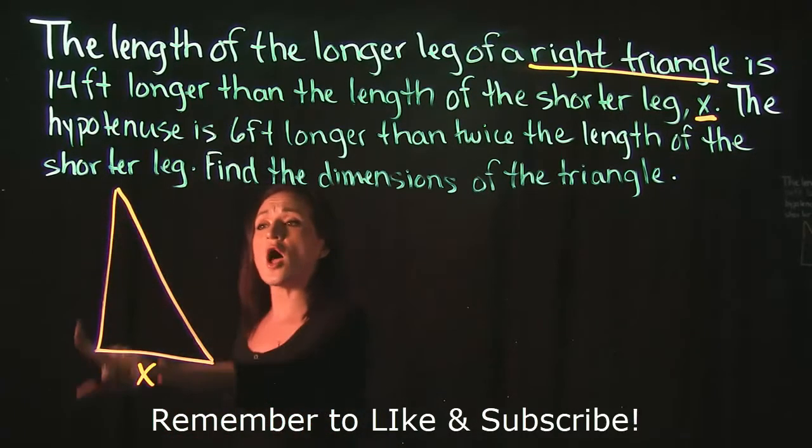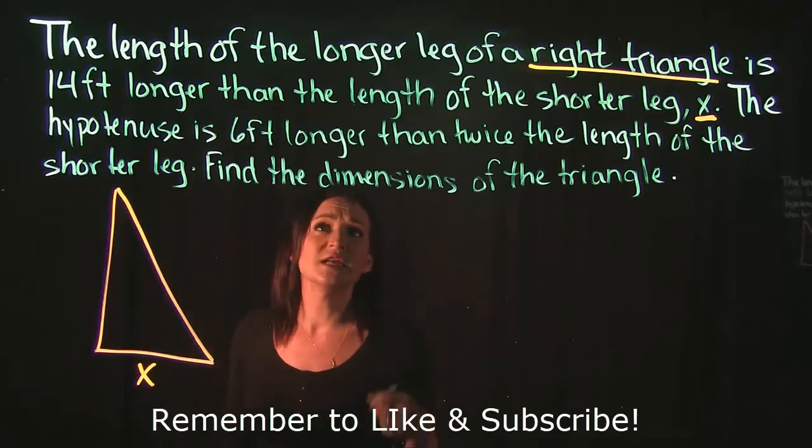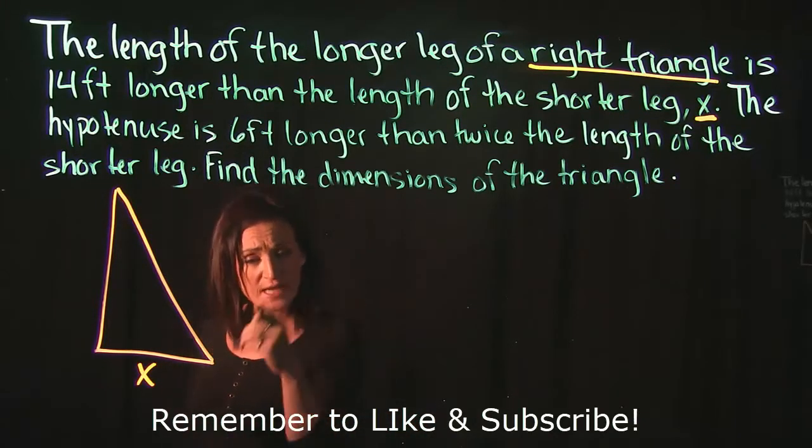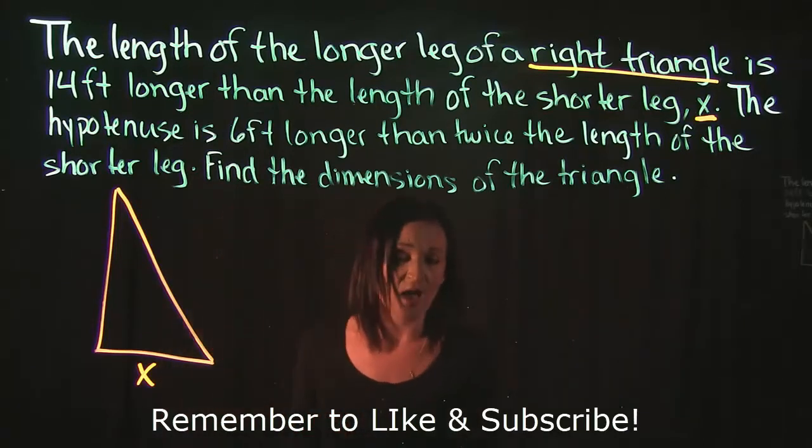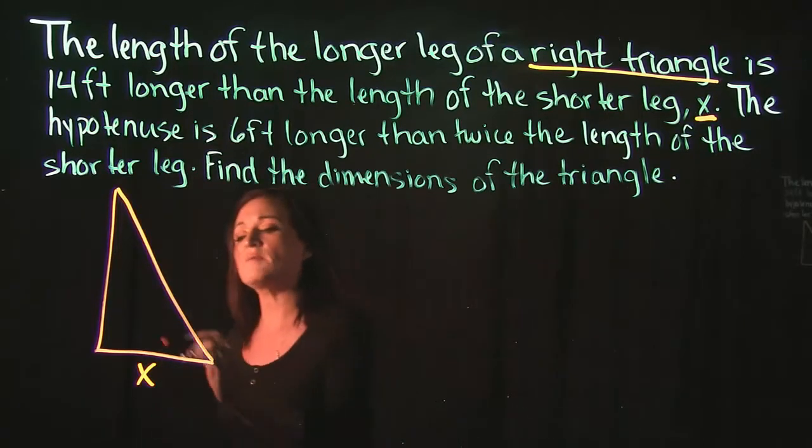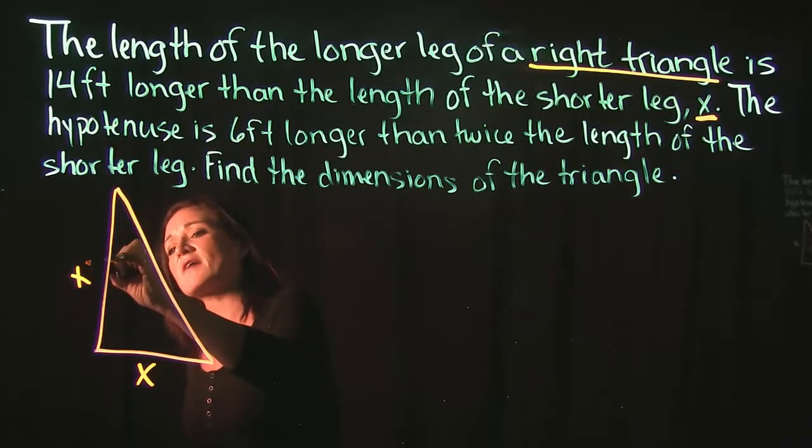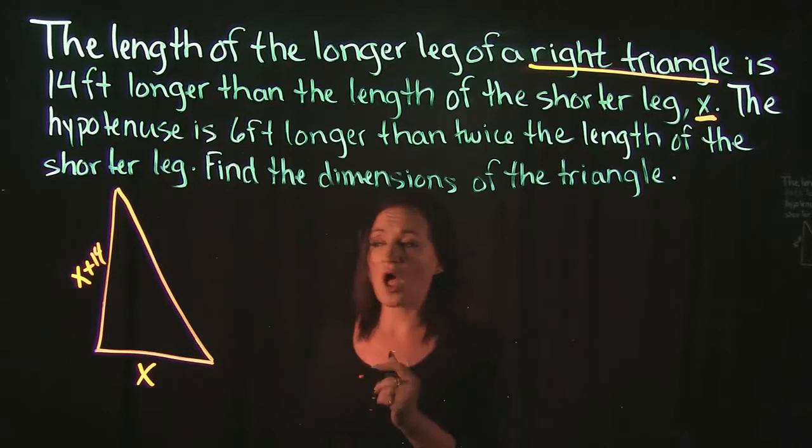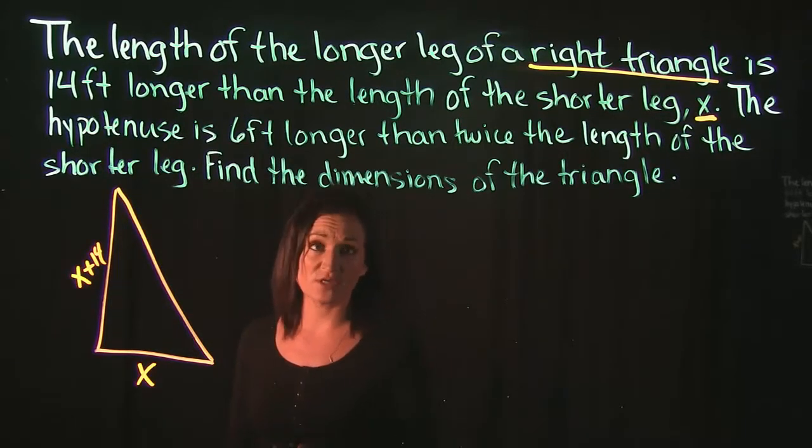It says this longer side is 14 feet longer than the shorter side. So the shorter side is X, it's 14 feet more than that. So if I want 14 feet more than X that means I have X and I want to add 14 to it. So that means the longer side has to be X plus 14.